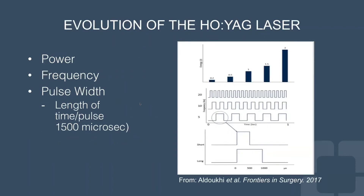Over the last few years, there has been significant evolution in holmium YAG lasers. We were first able to control power and frequency; most early machines were low-frequency because they were built from a single rod. More recently, in the last 5 to 10 years, we've been able to modulate parameters such as pulse width, which controls the length of time per pulse. With multi-rod generators, we can now have higher-frequency machines with current-day frequencies over 50 hertz.